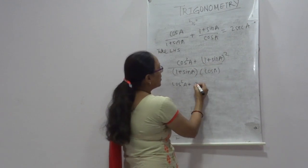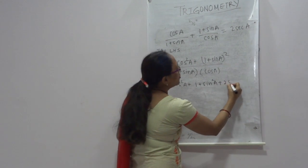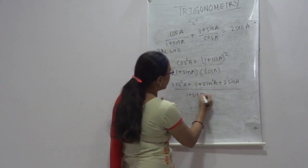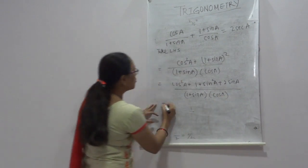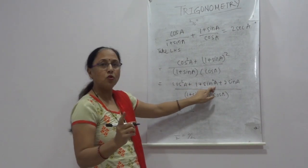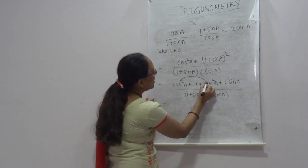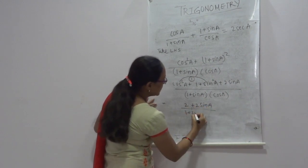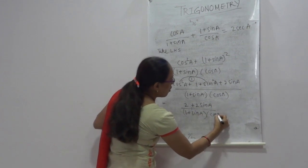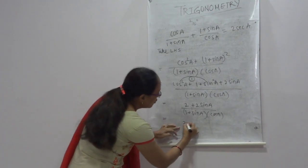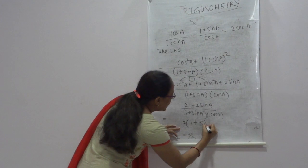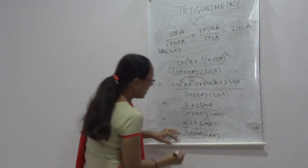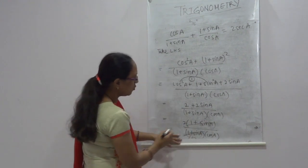After taking LCM: cosA · cosA = cos²A in one part, and (1 + sinA)² in the other. Expanding (1 + sinA)² using A² + 2AB + B²: we get 1 + sin²A + 2sinA. The denominator remains cosA(1 + sinA). Now using cos²θ + sin²θ = 1, so cos²A + sin²A = 1.